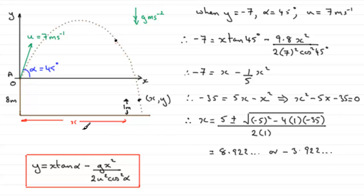Now obviously X has got to be positive, so we'll just say that since X is greater than 0, we therefore have that X equals 8.92 meters, and we'll give that to three significant figures, 3SF.